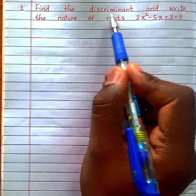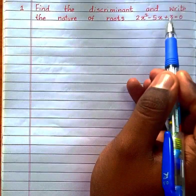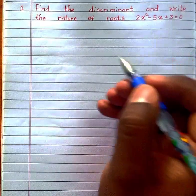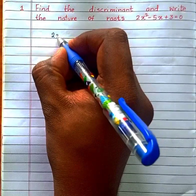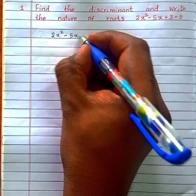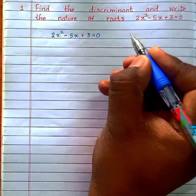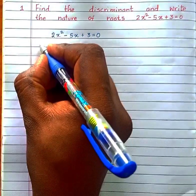First question: find the discriminant and write the nature of roots 2x² - 5x + 3 = 0. The given quadratic equation is 2x² - 5x + 3 = 0.